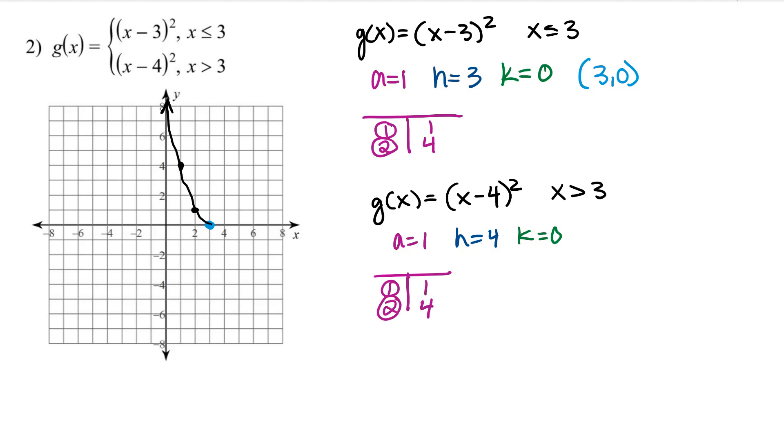The vertex of this piece is 4, 0, and the rise is 1 and 4. To the left of the vertex, we rise 1. To the right, we rise 1. To the left 2, we rise 4. To the right 2, we rise 4. Graph your parabola.